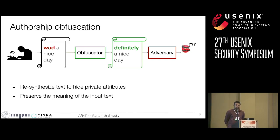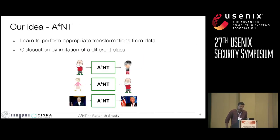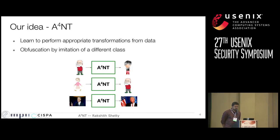While you do this resynthesis, you also want to preserve the meaning of the original text for it to be useful. So in this work, we present a new authorship obfuscation model which we call ANT. This model is fully automatic and it learns to do this obfuscation from data, using machine learning techniques to learn which transformations are most effective in order to fool the adversary while doing minimal changes so that the meaning of the sentence is preserved.